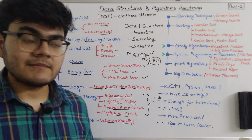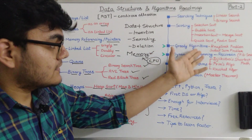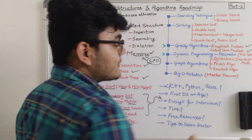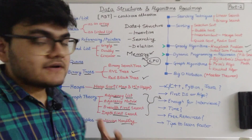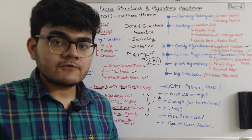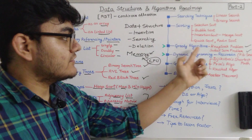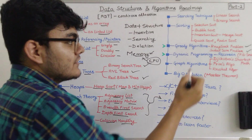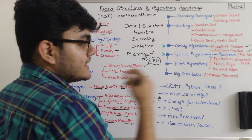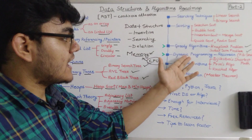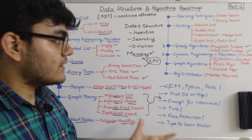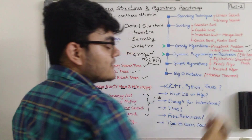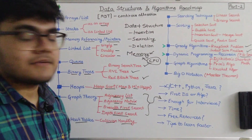Then comes greedy algorithms, which are really important for competitive programming. In greedy algorithms we have the knapsack problem, the subset sum problem, and various other problems you can pick up from the internet and solve. Then we have dynamic programming, in which we actually optimize greedy algorithms. A simple example to implement dynamic programming is the Fibonacci series.